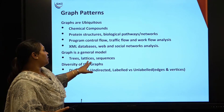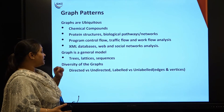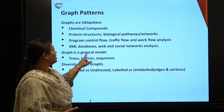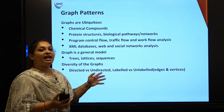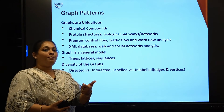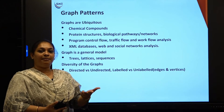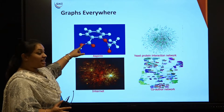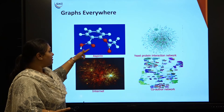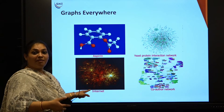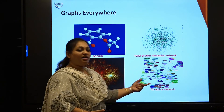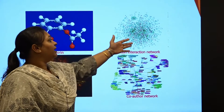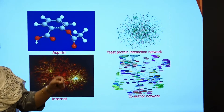A graph is a general model that includes trees, lattices, and sequences. Graphs can be directed, undirected, or labelled, involving edges and vertices. Applications include internet networks connecting one network to another, co-author networks where a book has multiple authors linked together, yeast protein interactions, and biological networks — anything connecting one point to another is a graph.